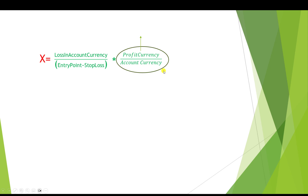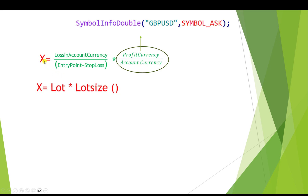We can easily access the profit/account currency ratio using the predefined MQL5 function: `SymbolInfoDouble(symbol, SYMBOL_ASK)` — for example with GBPUSD or GBPCHF. However, X represents volume like 200,000 or 500,000 units. We want to express this as lots (e.g. 2.0, 1.0, 0.01). Since X = lot × lot_size, and lot size is normally 100,000 for currency pairs like EURUSD or GBPCHF (and 100 for stocks like Apple), we can substitute accordingly.